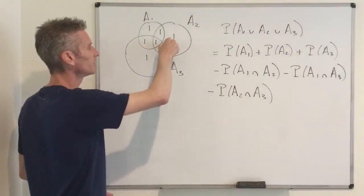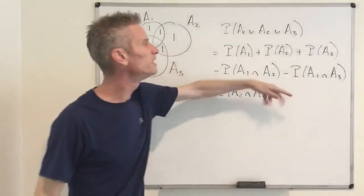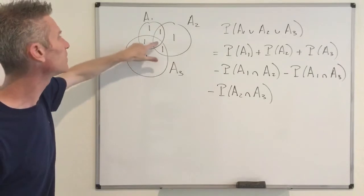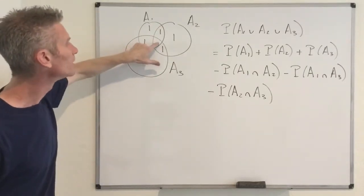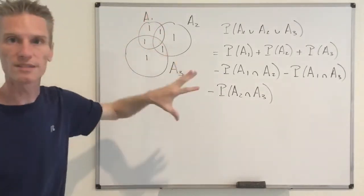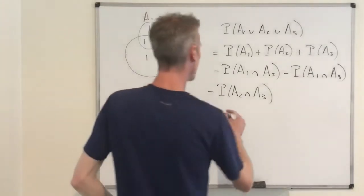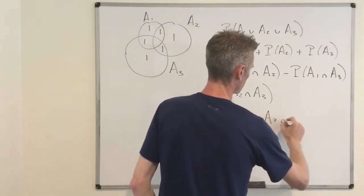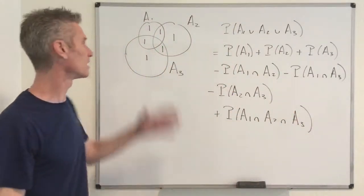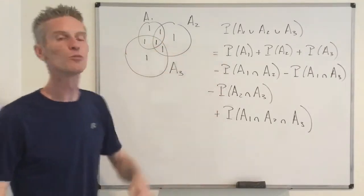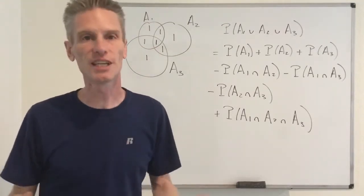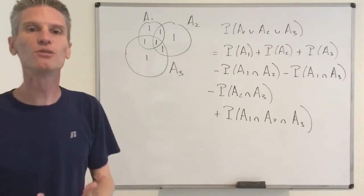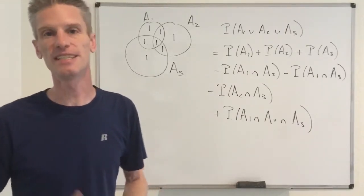After subtracting those pairwise intersections, we now underestimate the probability because we count everything in the union once except for the intersection of all three events. So to make sure we count everything exactly once, we need to add back the probability of the intersection of all three events. This is not a proof — I'm thinking of counting outcomes rather than probabilities, and I'm only looking at three events — but it shows the intuition for why the inclusion-exclusion identity must be true.